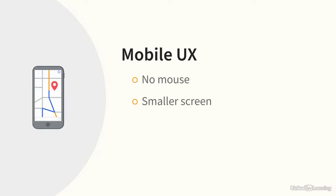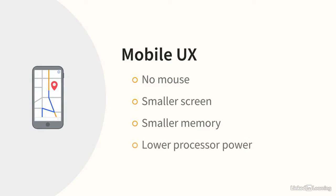Finally, mobile devices have much smaller memory and lower processor power than a desktop, and this makes it harder to show complex things like photos and videos. So how about the technology used to solve these problems?